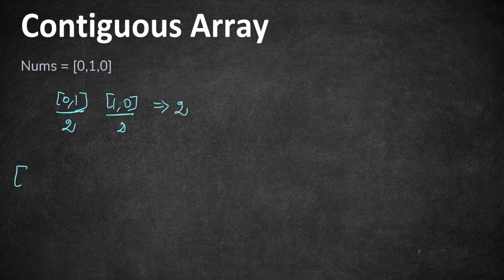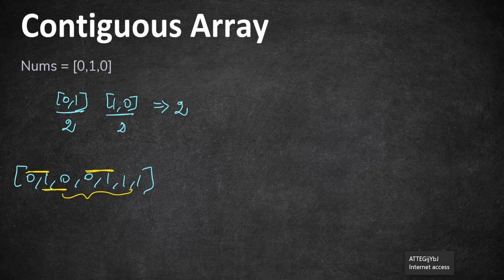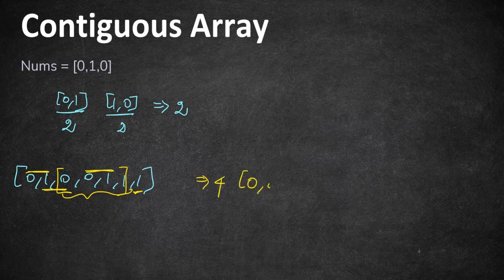Consider another array with values 0,1,0,0,1,1. The subarrays with equal numbers of zeros and ones include 1,0 and 0,1 (length 2 each), and also 0,0,1,1 (length 4). We cannot include the last 1 because it would increase the count of ones. So the maximum subarray we could form here is of length 4, containing two zeros and two ones.